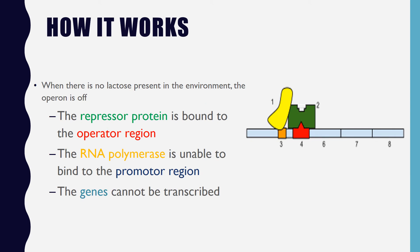The lac operon is an inducible operon, meaning that the operon is normally in the off state but can be turned on. When there is no lactose in the environment, the operon is off. This is because the cell does not want to waste energy making proteins that aren't currently needed. The repressor protein, encoded by lacI, is bound to the operator, which prevents RNA polymerase from transcribing the genes.